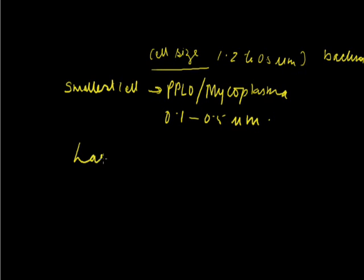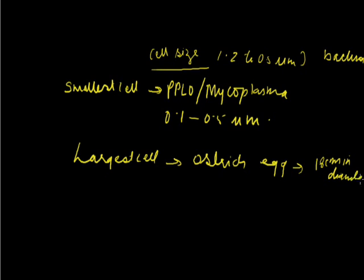The largest cell known till today is the cell of the ostrich or we can say ostrich egg which is around 18 centimeters in diameter. The longest cell known till today is nerve cell and this is around 1 meter in length.